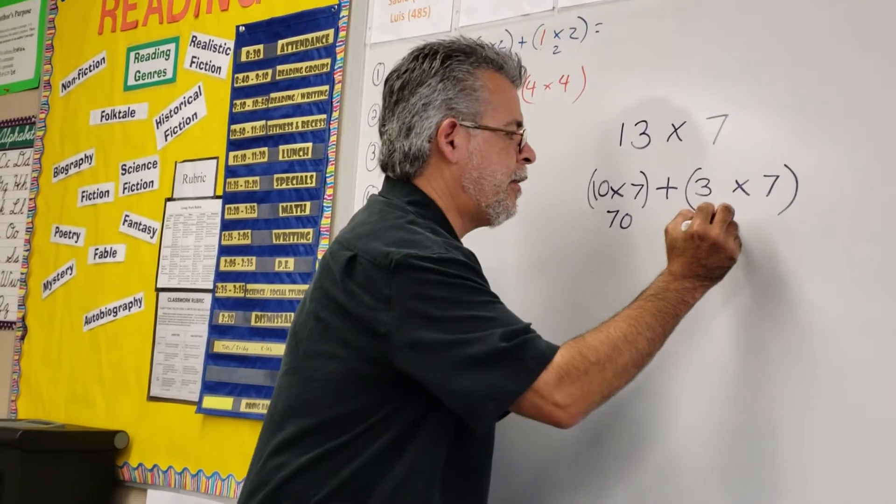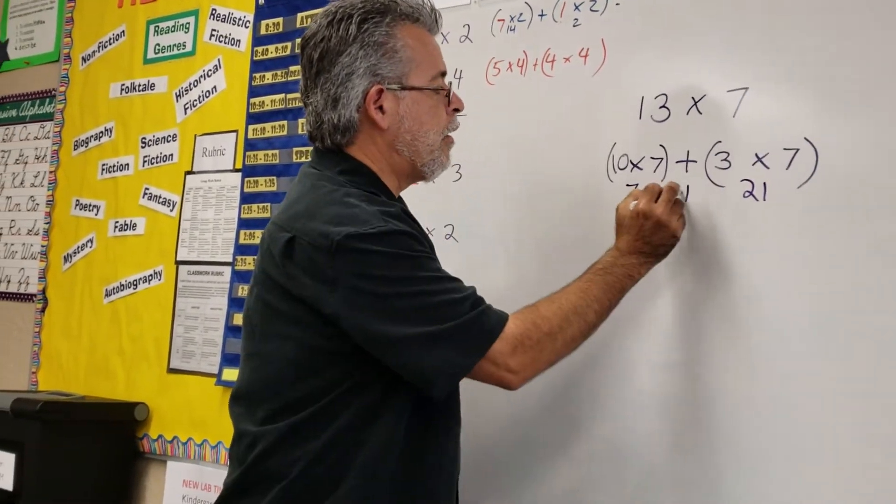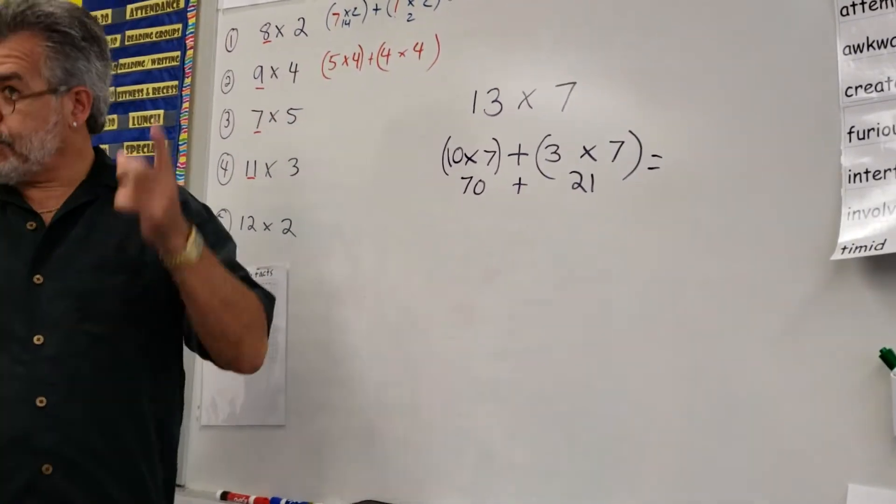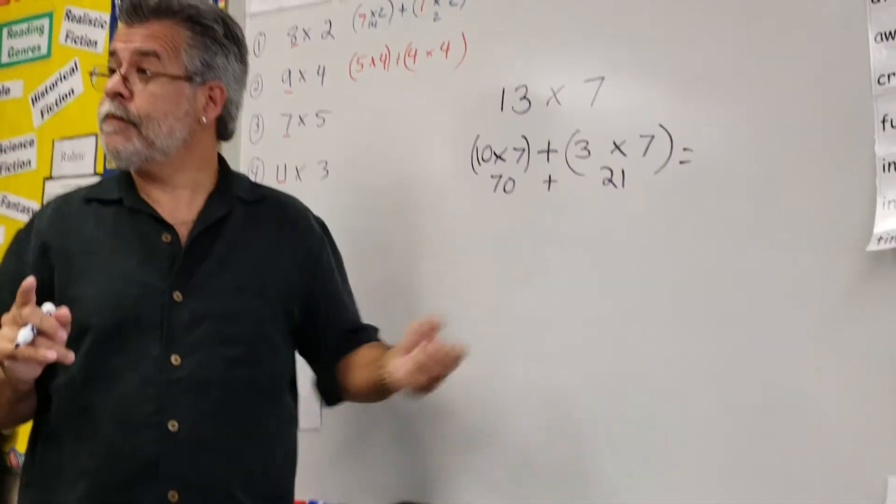Nice quick math. Okay, there we go. Now we have our plus sign. We have 70 plus 21. That's mental math. You should be able to add that easily.